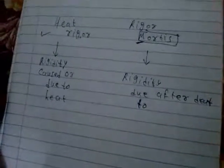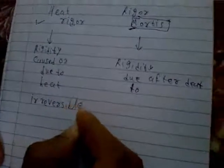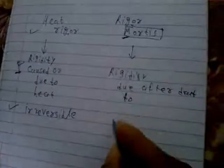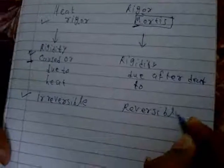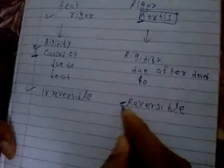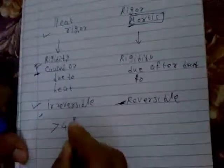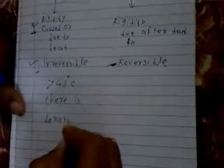Another important thing to remember: heat rigor is irreversible, while rigor mortis is reversible. Now, for heat rigor, whenever the temperature increases above 43 degrees centigrade, there is denaturation of protein. So whenever temperature increases beyond 43°C, denaturation of protein occurs — that is what causes heat rigor.